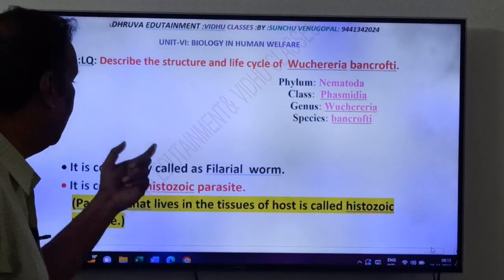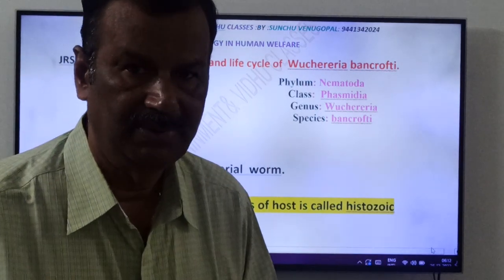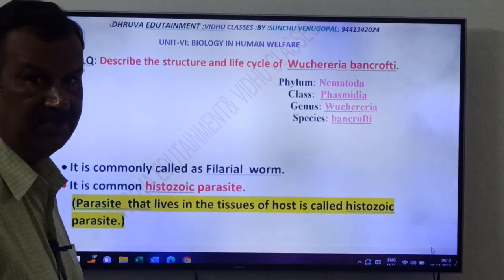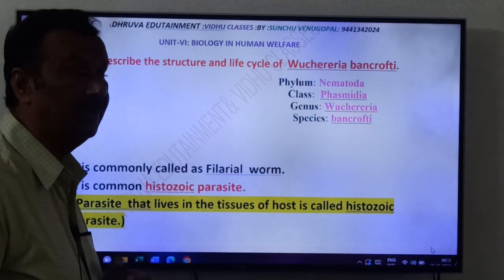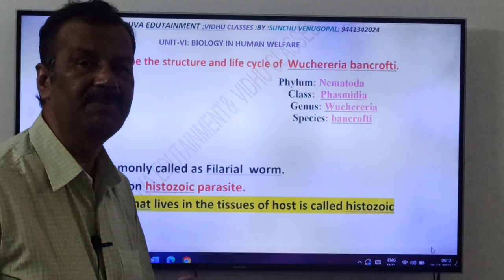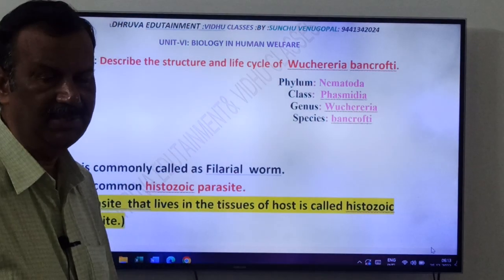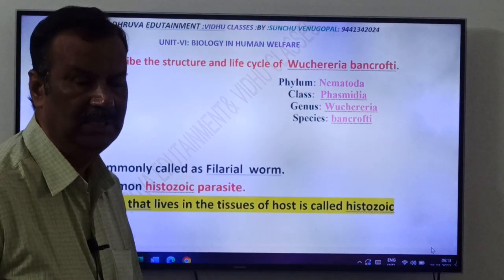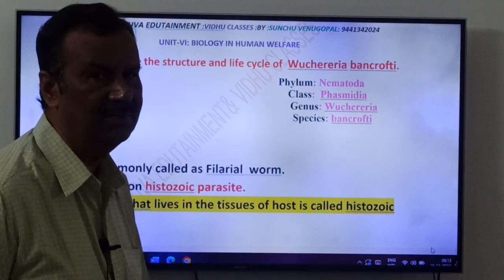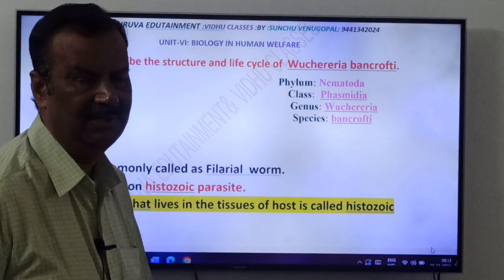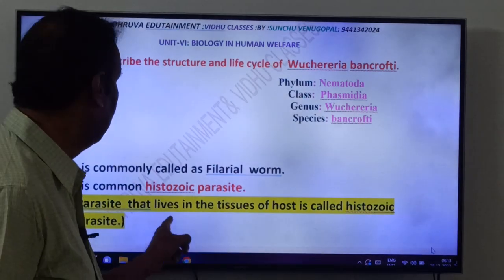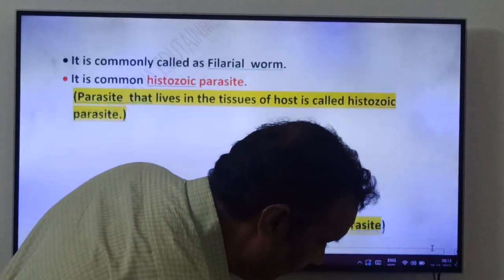Wuchereria bancrofti is commonly called the filarial worm. It is a common histozoic parasite. Histozoic parasite means the parasite which lives in the tissue — it is present in between two cells. So histozoic parasites are also called extracellular parasites or intercellular parasites. A parasite that lives in the tissue of the host is called a histozoic parasite.